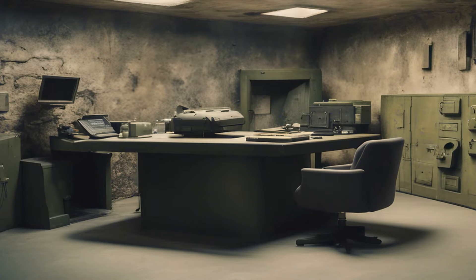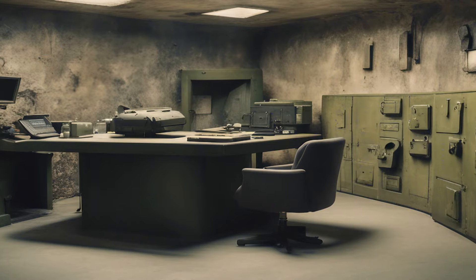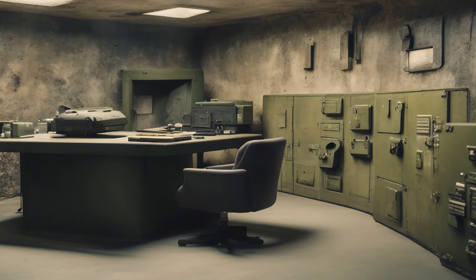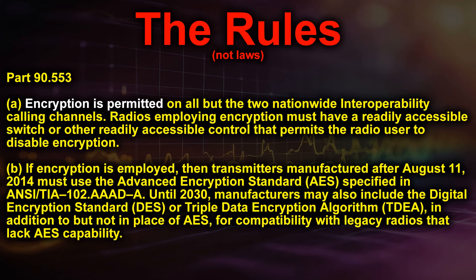We're gonna go over the rules, the exceptions to the rules, and then get a preview of some software that can do some really cool stuff. If you operate under Part 90, which is a private land mobile radio service, you're covered with encryption. You can pause the video and read this directly from the FCC website.